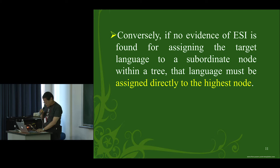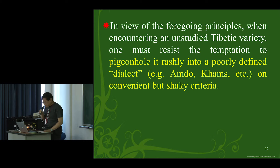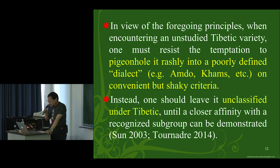Conversely, if no evidence for ESI is found for assigning the target language to a subordinate node within a tree, that language must be assigned directly to the highest node. In view of these principles, if one encounters an unstudied Tibetan variety somewhere in the world, one must resist the temptation to pigeonhole it rashly into a poorly defined dialect on convenient but shaky criteria. Instead, one should leave it unclassified under Tibetan at the highest level, until a closer affinity with a recognized subgroup can be demonstrated.